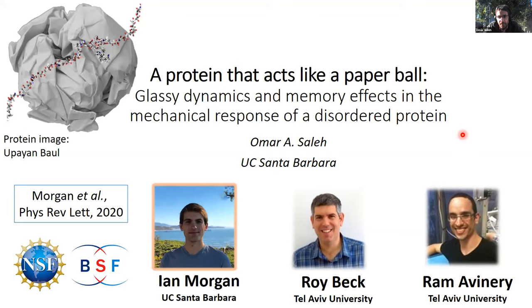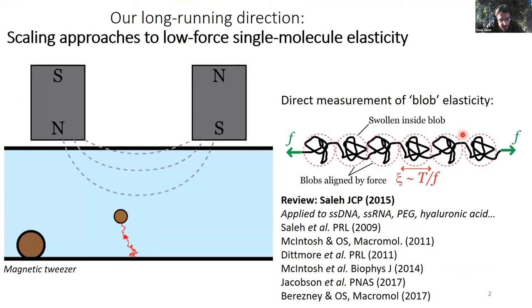So by way of introduction to my lab, our long-running direction has been to use single molecule stretching, particularly at low forces, to study polymer aspects of biomolecular behavior. So the classic experiment is a magnetic tweezer experiment. Because magnetic tweezers are very stable, we can access very low forces, and in fact directly measure elastic responses due to these so-called blob models that you might be familiar with from the work of Dijen and Pincus and others.